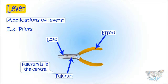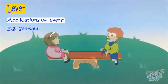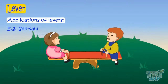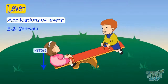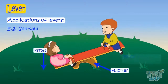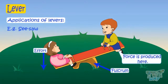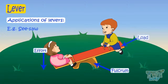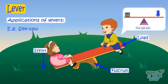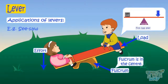Here is another example — a seesaw. Force is being applied, this is the fixed support, and here the force is produced and the boy is lifted up. So this point is force, this is fulcrum, and this is load. Again, this is an example of a first class lever, as fulcrum is in the center here.